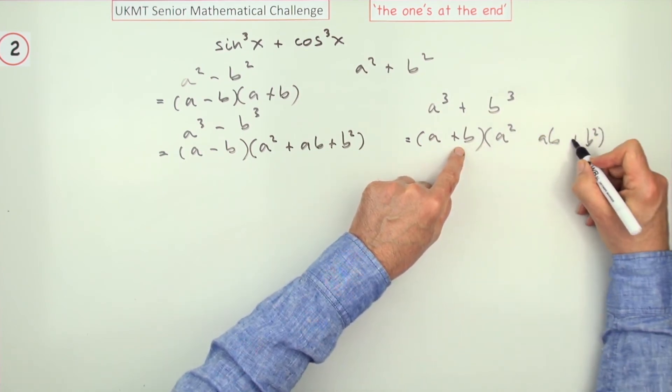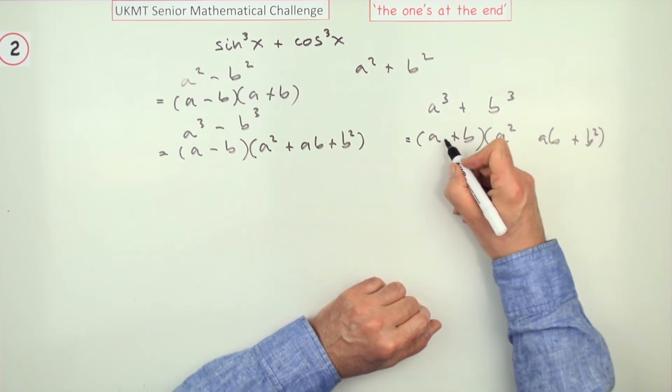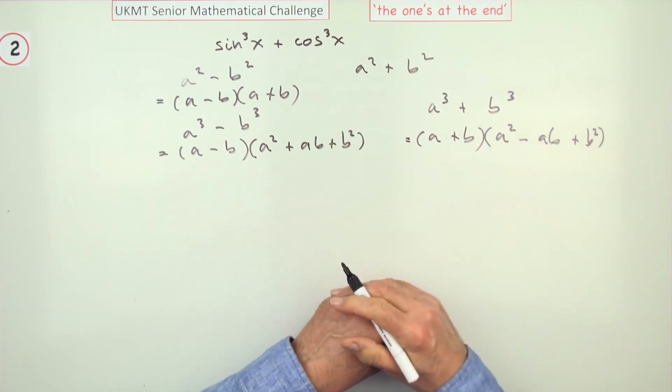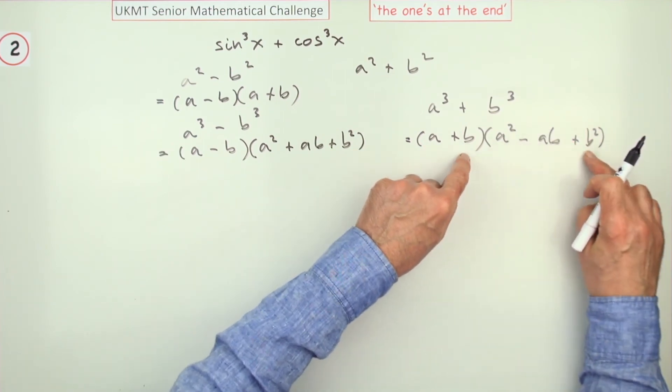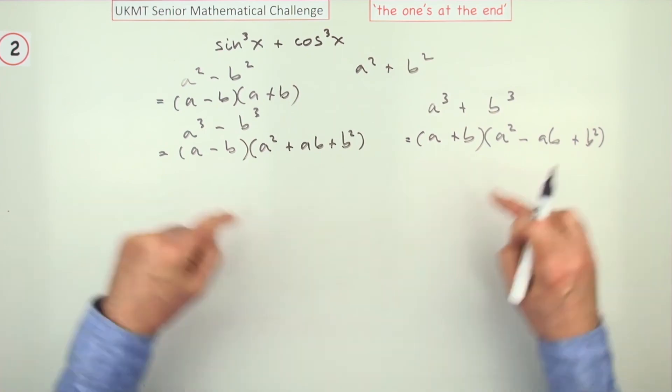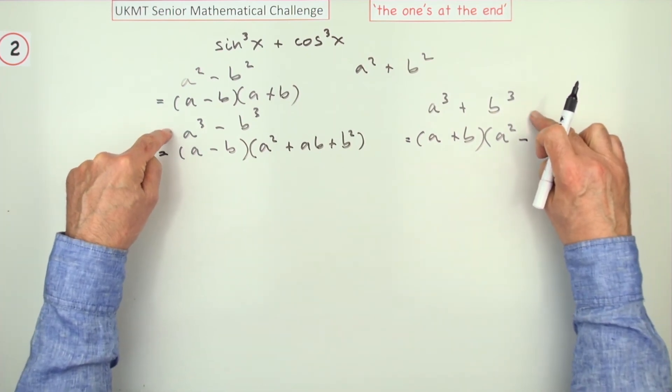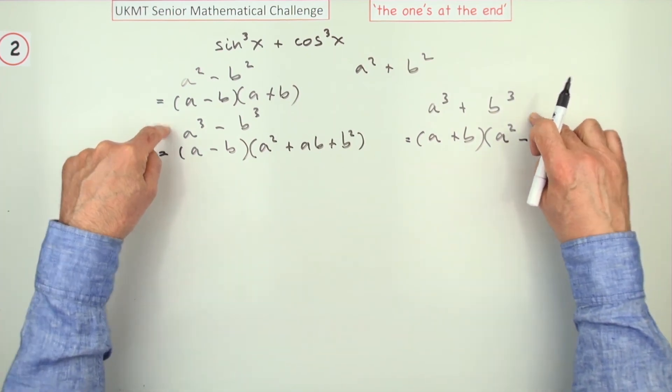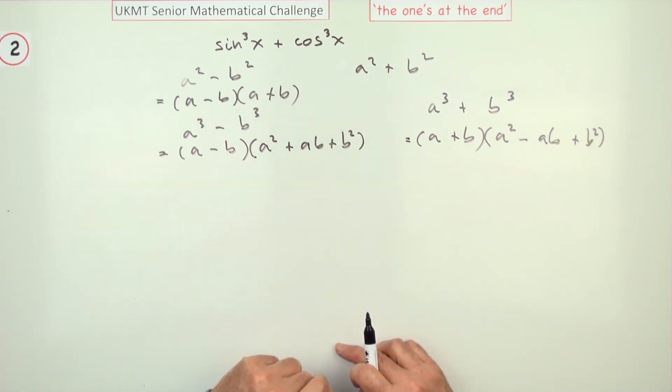And that must be a plus over here, but for the middle terms to disappear it would have a negative in here, so you're only left with the first times the first and the last times the last. If you know that these two patterns, they can be useful in simplifying problems: the difference of two cubes and the sum of two cubes.